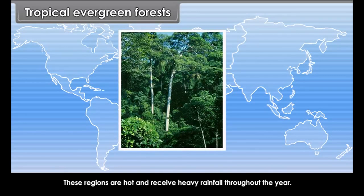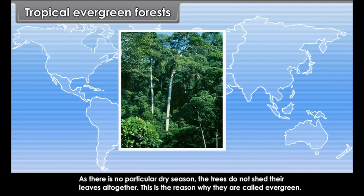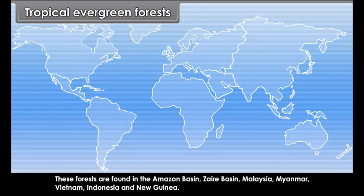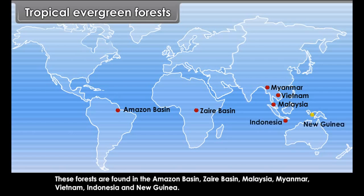Tropical Evergreen Forests. These forests are also called tropical rainforests. These thick forests occur in the regions near the equator and close to the tropics. These regions are hot and receive heavy rainfall throughout the year. As there is no particular dry season, the trees do not shed their leaves altogether — this is why they are called evergreen. These forests are found in the Amazon basin, Zaire basin, Malaysia, Myanmar, Vietnam, Indonesia and New Guinea.